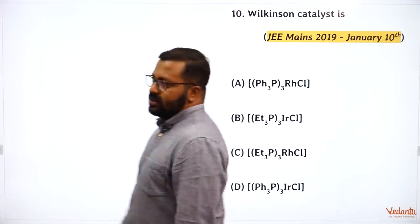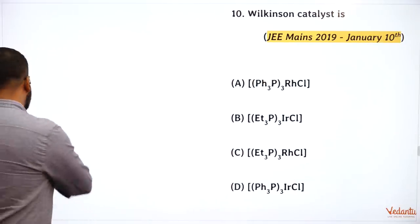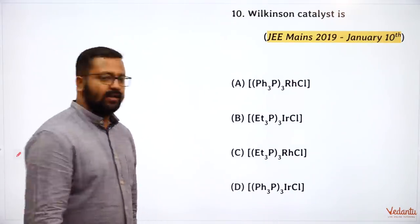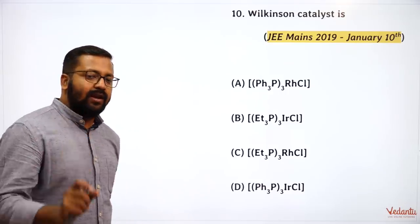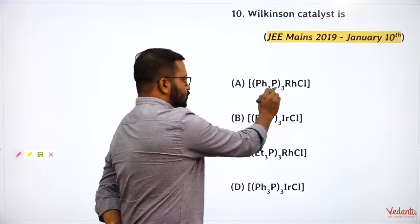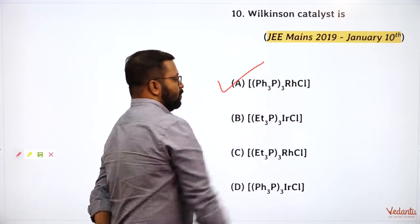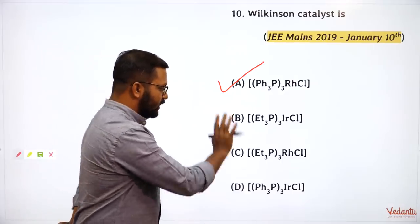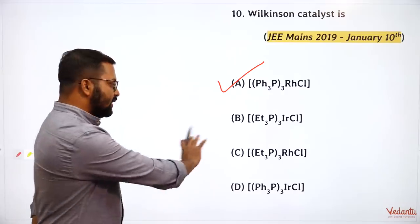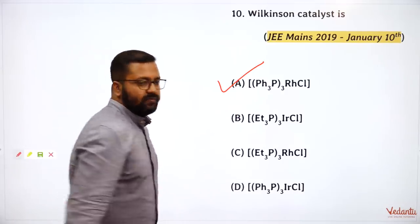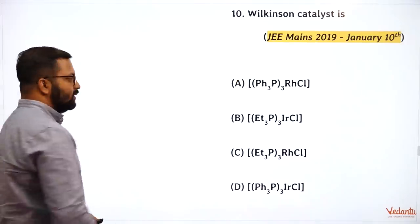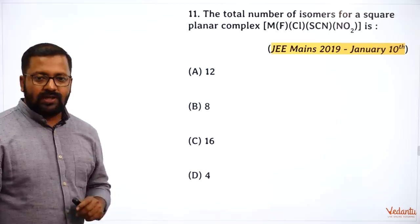What is Wilkinson's catalyst? Wilkinson's catalyst contains PPh₃ ligand, chlorine, and rhodium. The formula is RhCl(PPh₃)₃. The answer is A — it is none of the other entities listed. This is Wilkinson's catalyst.